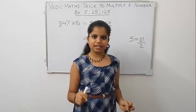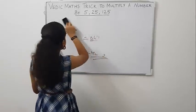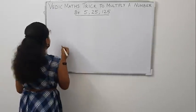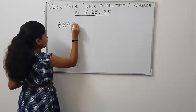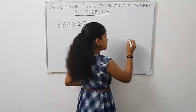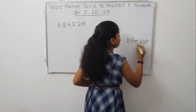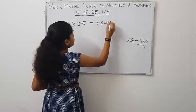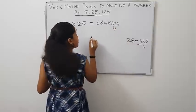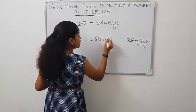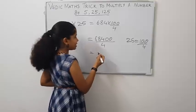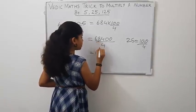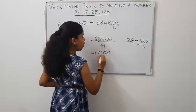Now, let us see how to multiply a number by 25. First, let us take 684 into 25. Friends, we know that 25 equals to 100 by 4. So, write the question as 684 into 100 by 4, 68400 by 4. Now, we need to divide 68400 by 4. That is 17100. This is our answer.